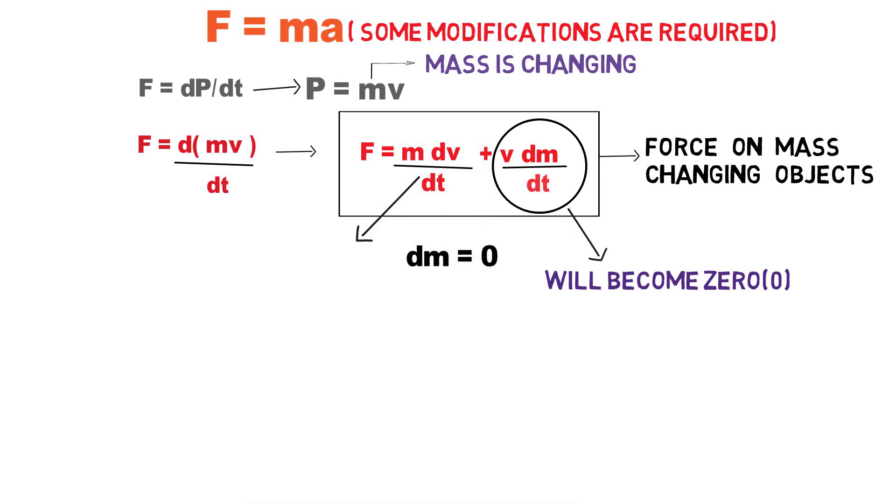Now, change in velocity divided by change in time is called acceleration. And that is how you go back to Newton's second law common equation F equals ma.